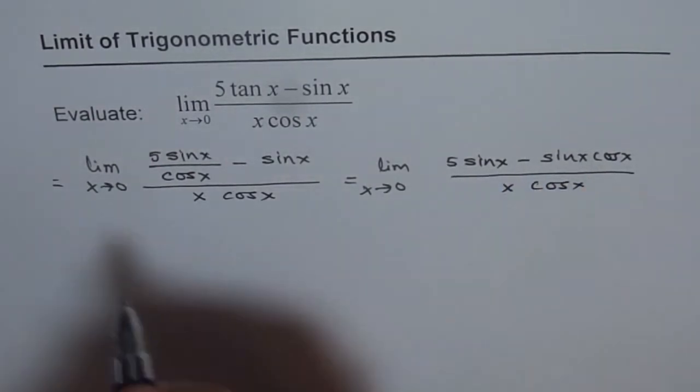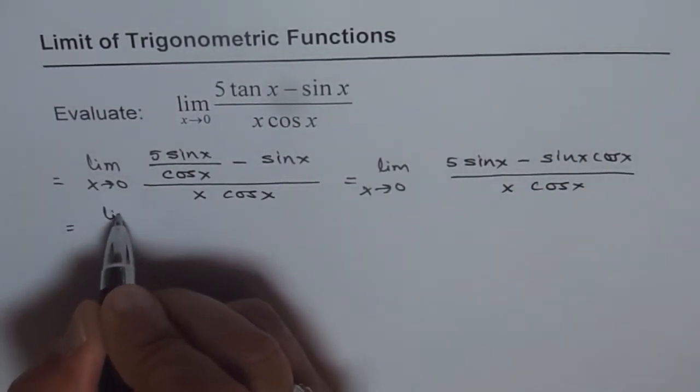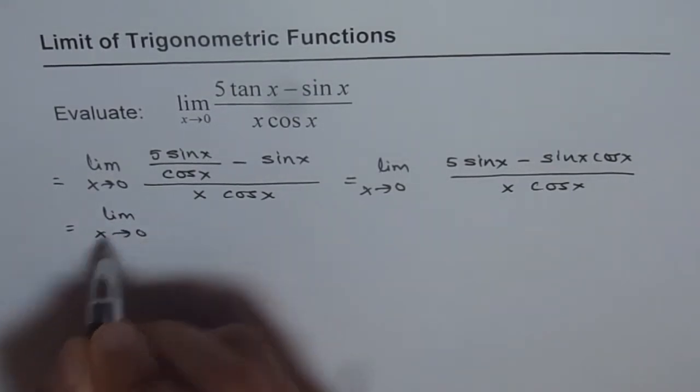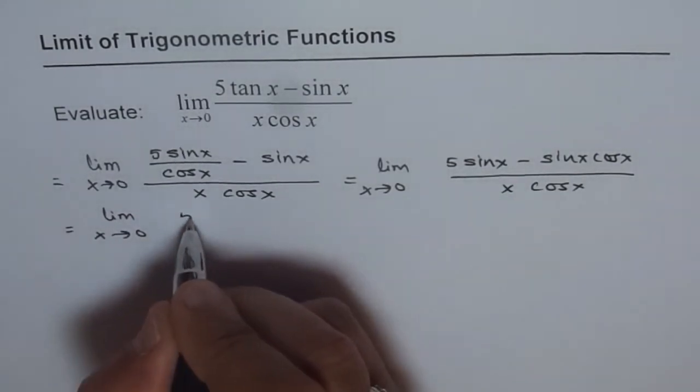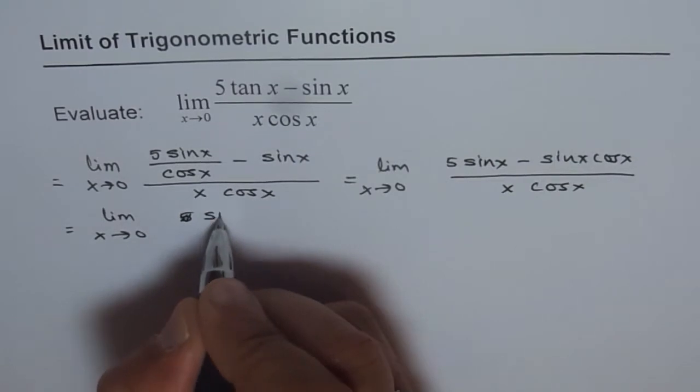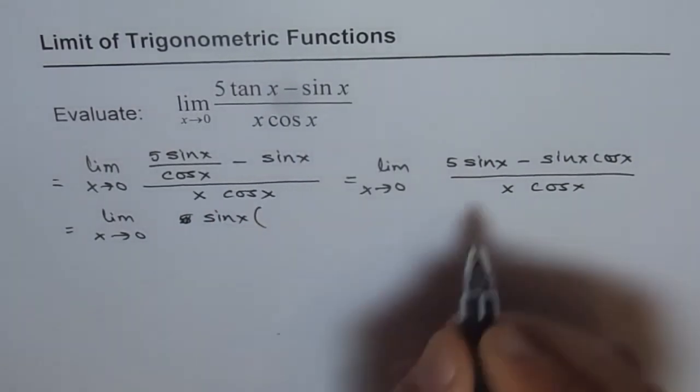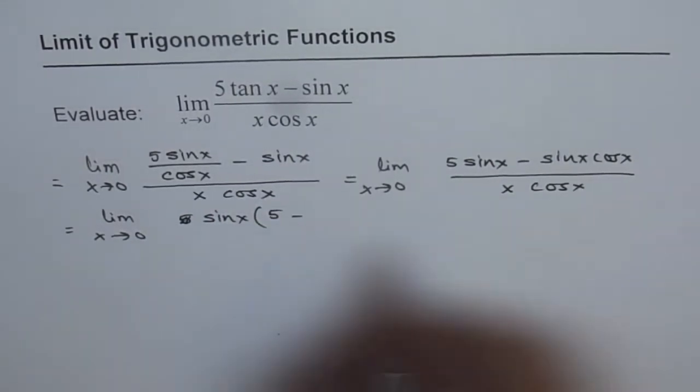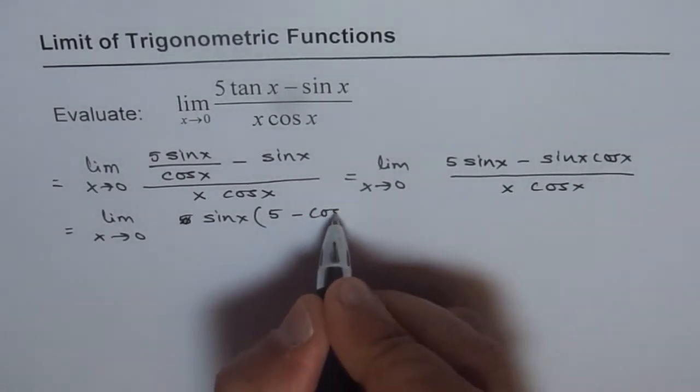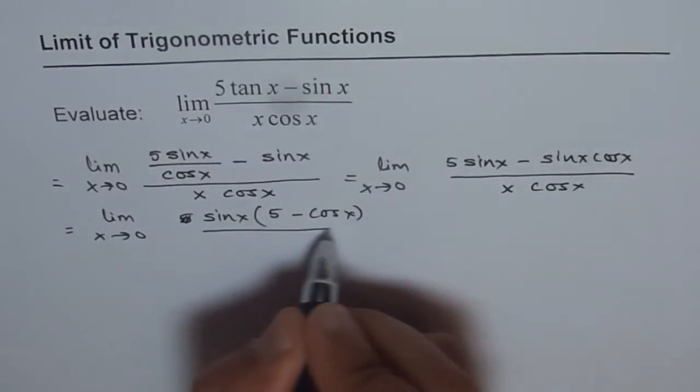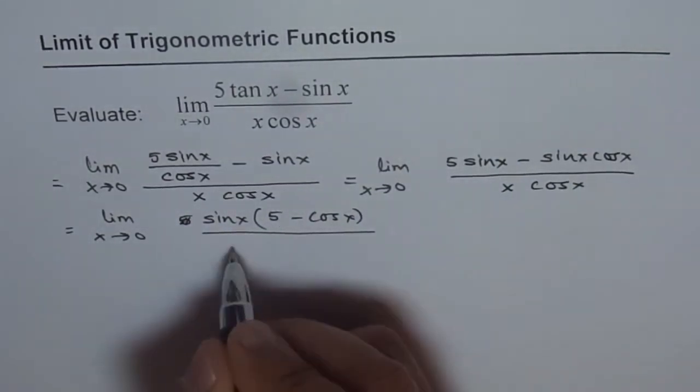Now we can take sin x common. So we get limit x approaching 0. Sin x is common, so sin x within bracket we get (5 - cos x) over (x times cos x).